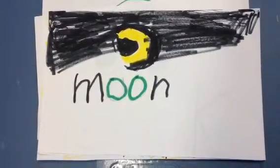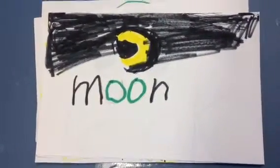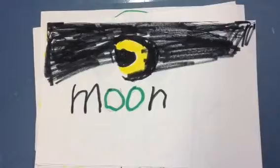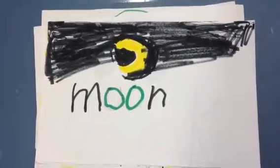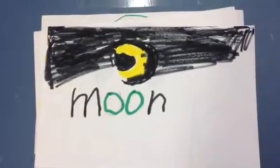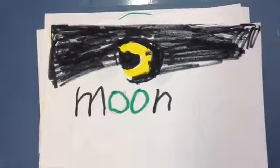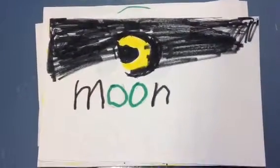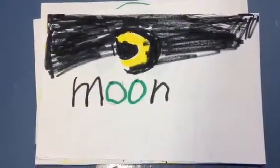Moon. This is a moon. It is spelled M-O-O-N. The O-O says oo.